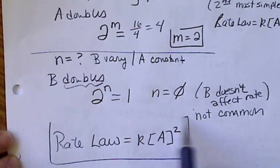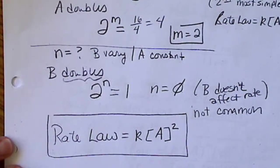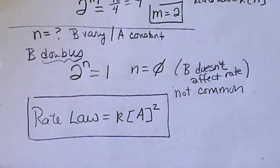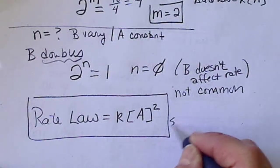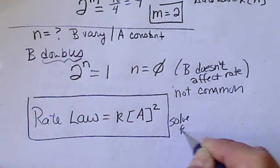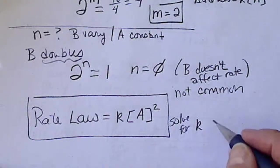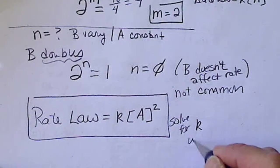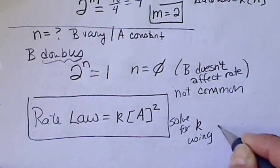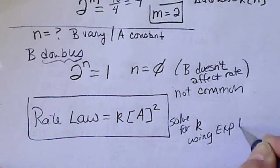So, this means the rate law equals KA squared. And B to the 0 just means it does not depend on B. So, this is exactly one of the most simplest cases we could have. Now, I need to solve for K, which is the rate constant,